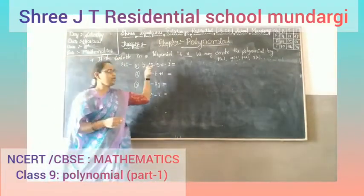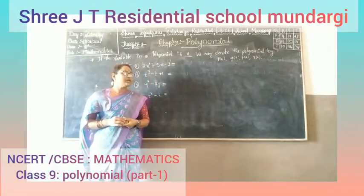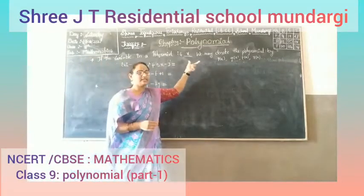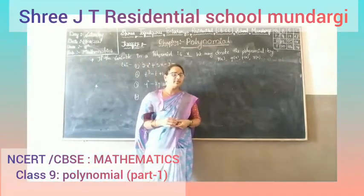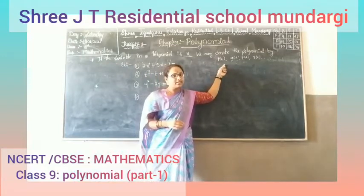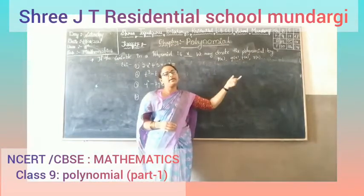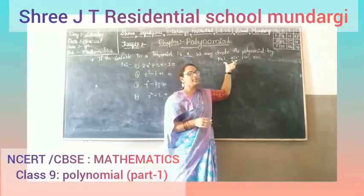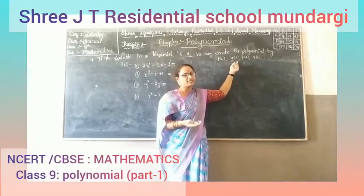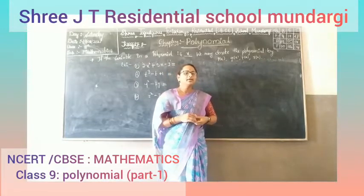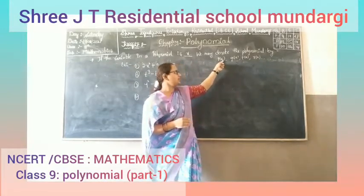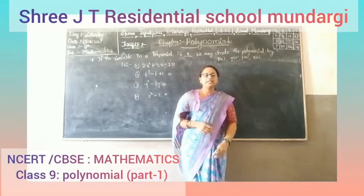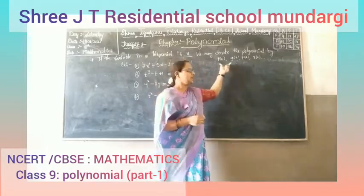If the variable in a polynomial is x, we may denote the polynomial by P of x, Q of x, T of x, R of x, and so on. You have to write polynomials in the form of P of x or Q of x, using any alphabet to denote the polynomial.